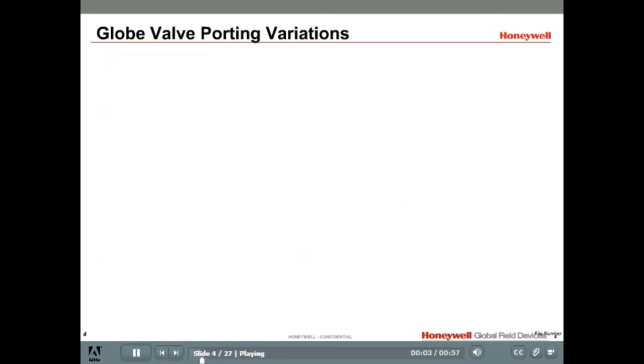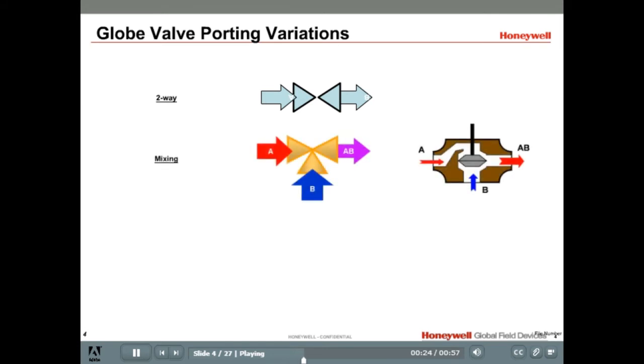Globe valves are available as two-way control valves or three-way mixing and diverting valves. In a two-way valve, fluid enters one port and exits out the other port. The size of the opening between the valve ports controls how much fluid will exit the valve. Three-way valves may be mixing or diverting. With mixing valves, fluid enters from ports A and B, mixes together, then exits out the AB port.